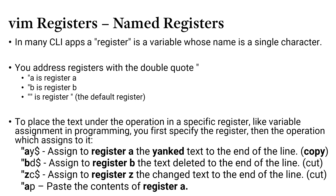The default register is the double quote repeated. And if we wanted to place some text into a register, we first address the register. So in this example, I want to store some text in register A, followed by yank to the end of the line. This is going to copy text from where the cursor is to the end of the line and store that in register A.